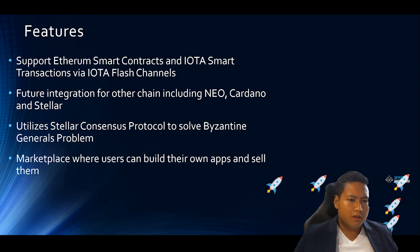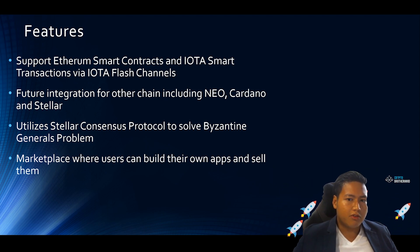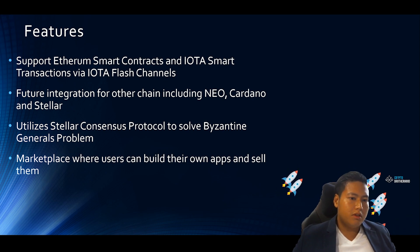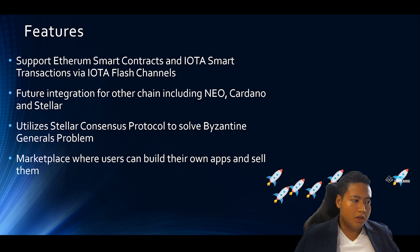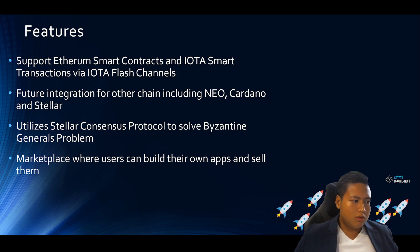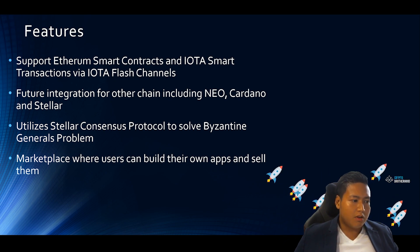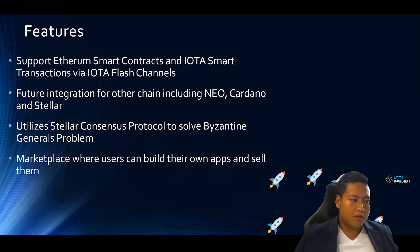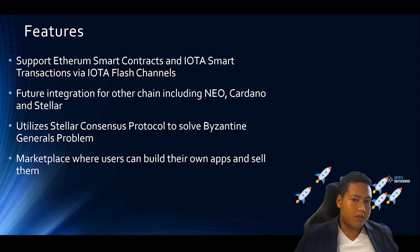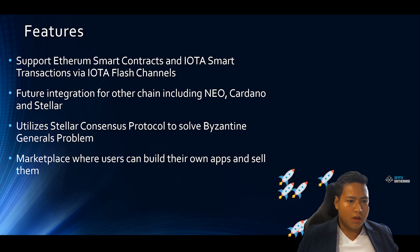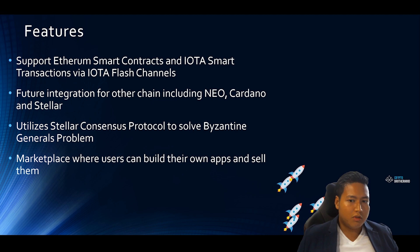Sparkster currently supports Ethereum smart contracts and IOTA smart transactions via the IOTA flash channels. Users will be able to write smart contracts in plain English without knowing how to code using these two smart contract platforms. In the future, they will be integrating with other blockchains as well, including Neo, Cardano, and Stellar. The platform utilizes the Stellar consensus protocol to solve the Byzantine generals problem.